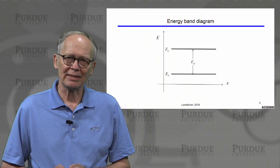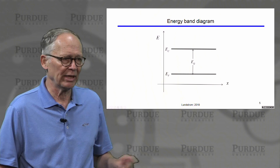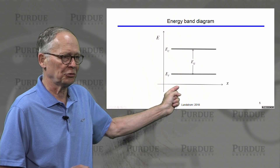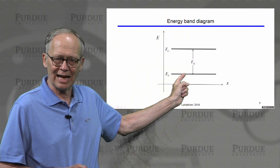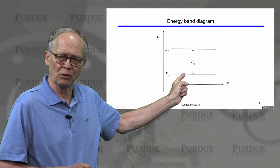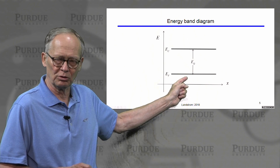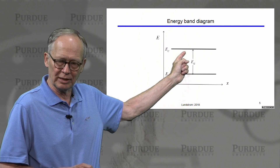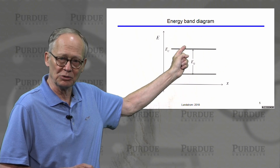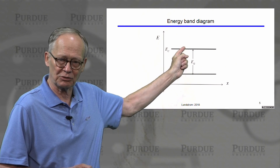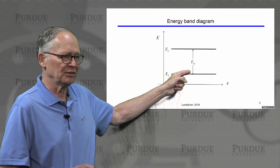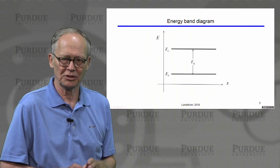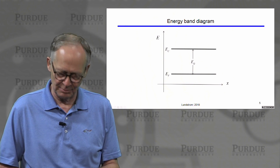We draw the energy band diagrams in a highly simplified way — energy versus position. We indicate only the top of the valence band, because that's where most of the holes will be, and only the bottom of the conduction band, because that's where most of the electrons will be. The distance between the top of the valence band and the bottom of the conduction band is the band gap, E sub g.